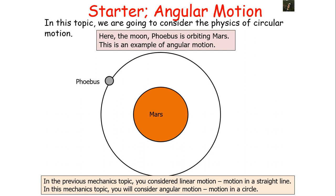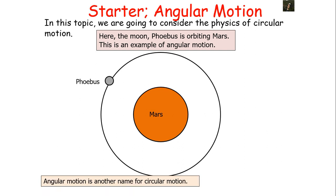An example of circular motion would be an orbit. Here the moon Phobos is orbiting Mars, so it is carrying out angular motion. In previous mechanics topics we've considered linear motion — motion in a straight line — but in this mechanics topic we're going to consider angular motion: motion in a circle or motion radially. This builds upon concepts learned in the mechanics and materials module covered earlier in the course. Another name for angular motion is circular motion.